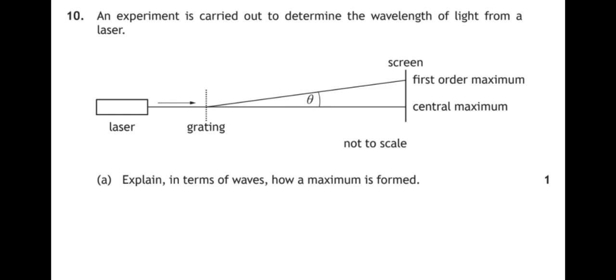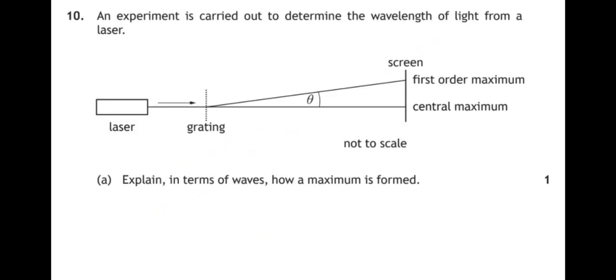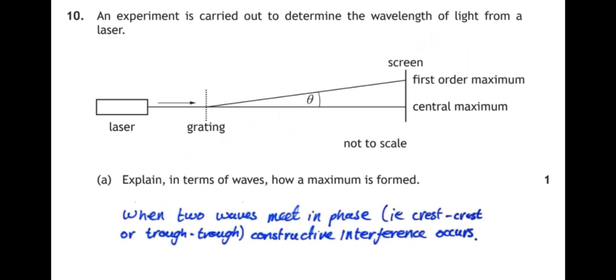Number 10. An experiment is carried out to determine the wavelength of light from a laser. Explain in terms of waves how a maxima is formed. So a maximum is formed like here where one of the waves has travelled a whole number of waves further than another, and therefore the waves arrive at their destination in phase, meaning that two peaks line up, two troughs line up, and so we get constructive interference. So when two waves meet in phase, crest to crest or trough to trough, constructive interference occurs.